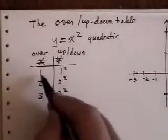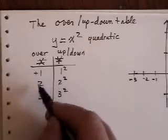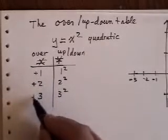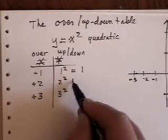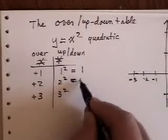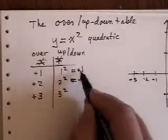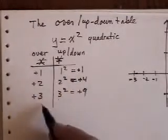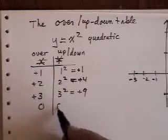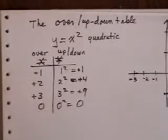So, if I go over, and that means to the right 1, to the right 2, to the right 3, I'm going to go up 1, up 4, up 9. Now, if I go over 0, I'll go up 0 squared, which means 0.